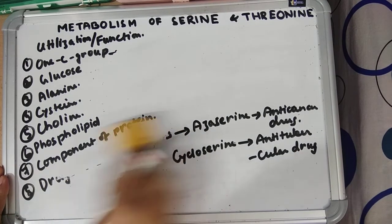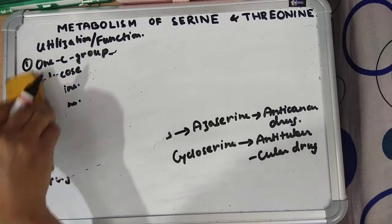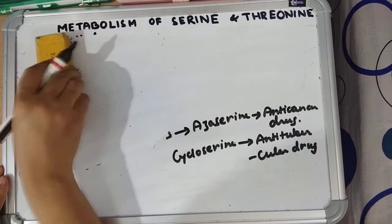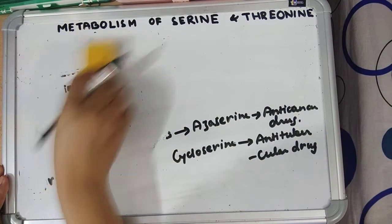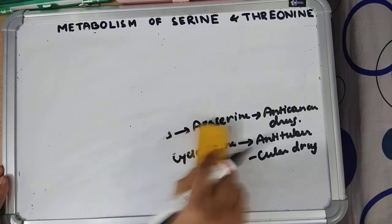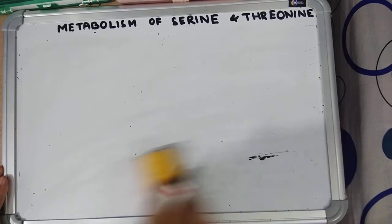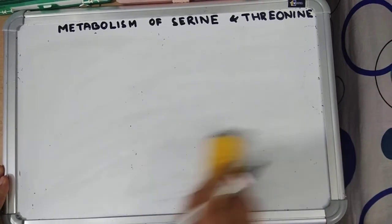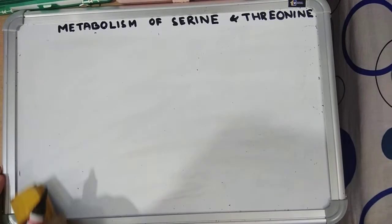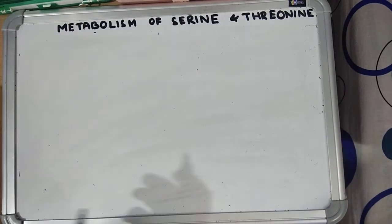Now for threonine: threonine is another hydroxyl group-containing amino acid, but it is an essential amino acid and a glucogenic amino acid. We will now discuss the utilization and catabolism of threonine.